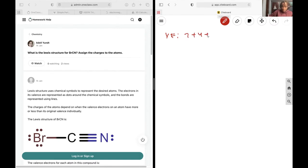So from Br, I have 7 plus 4 plus 5, and this will give me a total of 16 electrons to mess around with.